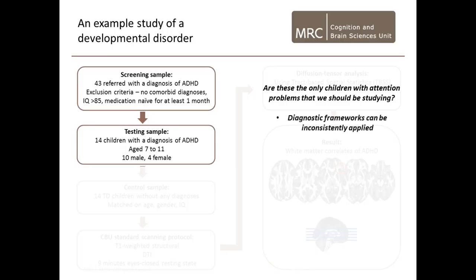One potential issue is who we are studying. Are these the only children with attention problems that we should be studying? Diagnostic frameworks can be very inconsistently applied — that happens even in the UK. In Cambridgeshire, they've stopped giving out ADHD diagnoses because they ran out of cash, so there's a very large waiting list of children with very strong ADHD-like symptoms who have no diagnosis and won't be in our study. Diagnostic frameworks are inconsistently applied even within the same country, let alone internationally — ADHD prevalence varies massively across countries.